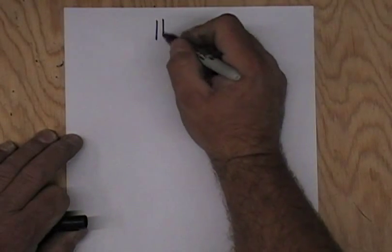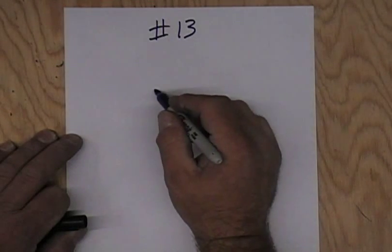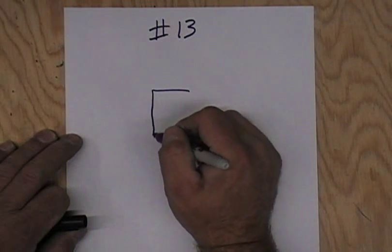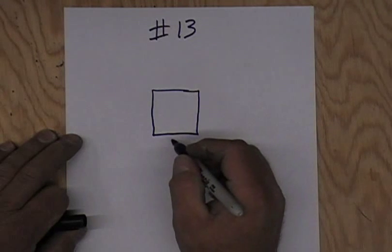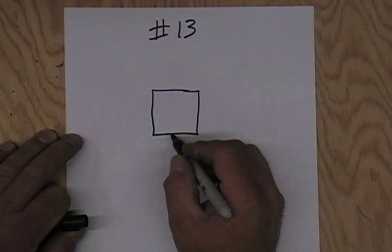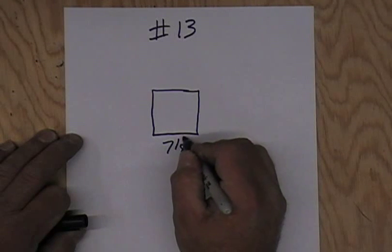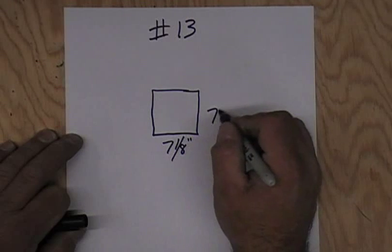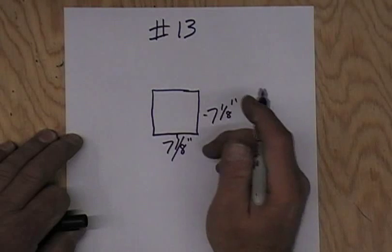The final fitting we need is layout number 13, good old lucky number 13. That's just going to be a simple cap with one inch flange down. The rough dimension we need is 7⅛ inches and 7⅛ inches on each side with one inch down.